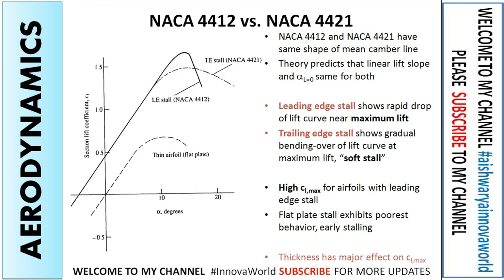Here comes the leading edge stall and trailing edge stall. The basic difference is in the thickness — the camber remains the same, and the shape of the mean camber line is the same, but the thicknesses differ. The NACA 4412 series represents the leading edge stall and the NACA 4421 represents the trailing edge stall. The leading edge stall provides maximum lift, whereas the trailing edge stall produces a soft stall.